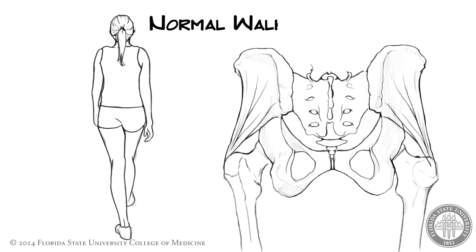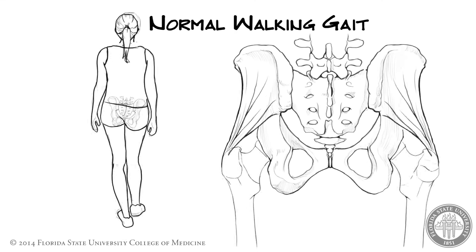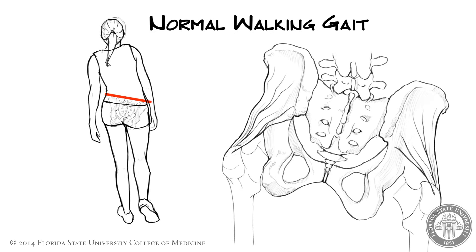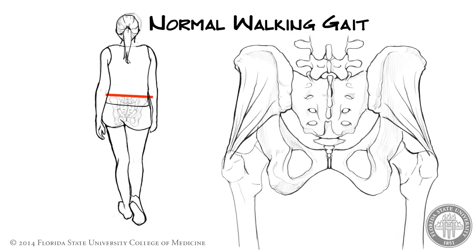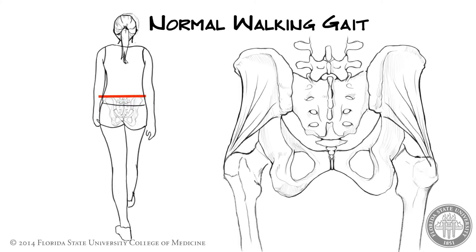Let's examine the normal walking gait. When the person's weight is supported by the left leg, the right leg is unsupported as it swings forward. The weight of the unsupported right leg should tilt the pelvis down towards the right side. However, the abductors on the left side offset this action by pulling the pelvis towards the fixed and stable left leg, thereby maintaining the pelvis in a neutral or non-tilted plane.